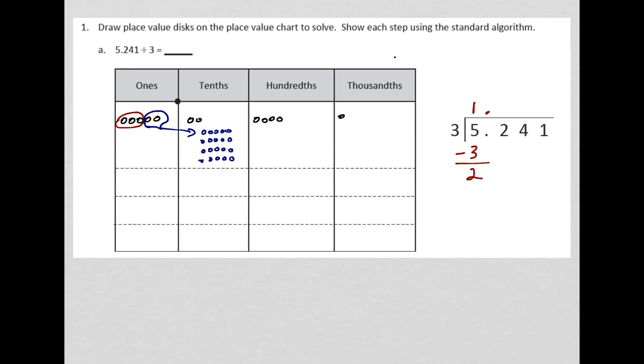So now I have 22 tenths in all to make groups of 3 with. And over here, what I'm going to do is I'm going to bring down this 2. And you'll notice that's from the tenths place. So what I'm actually showing there is that I have 22 tenths. Because if I think about the decimal points continuing down, that's what I'm showing. That I had 5 ones, I've used 3 of the ones, and then I'm trading the other 2 ones into tenths for 22 tenths in all.